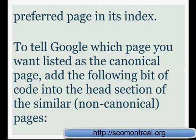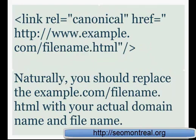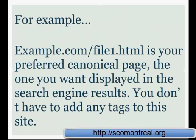To tell Google which page you want listed as the canonical page, you need to add the following bit of code into the head section of the similar pages — the non-canonical ones. You add: <link rel="canonical" href="http://example.com/filename"> — replacing example.com and the filename with your actual domain name and real file name.